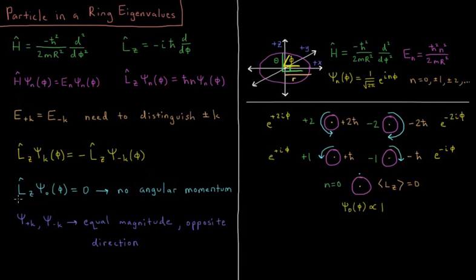Additionally, we have the special case that if we are in the ground state n equals 0, Lz acting on psi 0 is going to give us 0, because e to the i 0 phi is just e to the 0, which is 1. So psi 0 is just the normalization constant, 1 over the square root of 2 pi. That means that our Lz operator acting on the ground state wave function is going to give 0 as the eigenvalue, because it's going to be h-bar times 0. So there is no angular momentum in the ground state. It's not moving to the left or to the right.